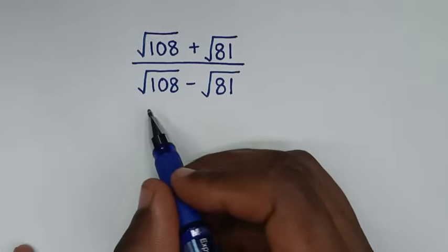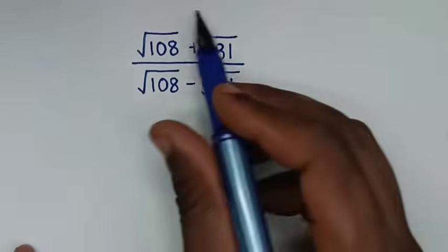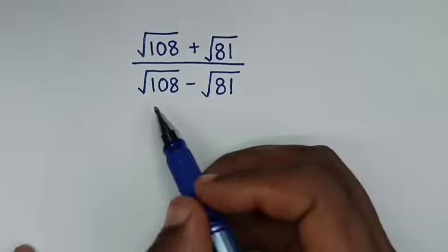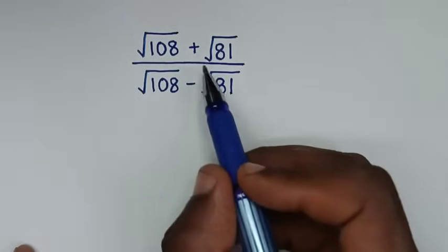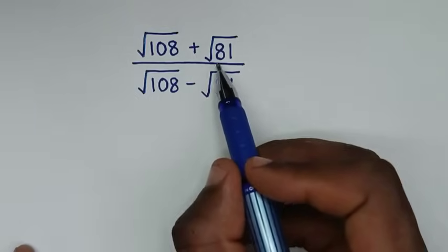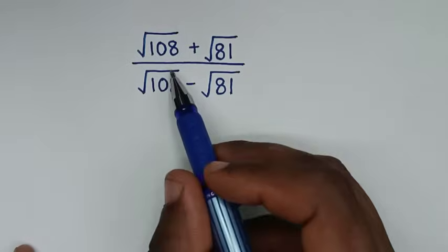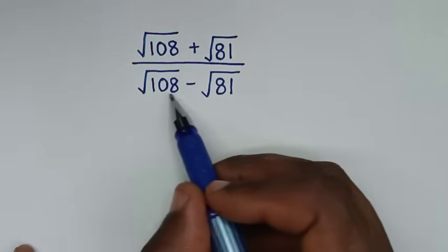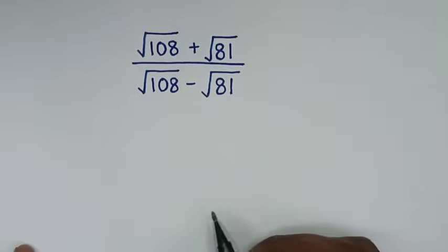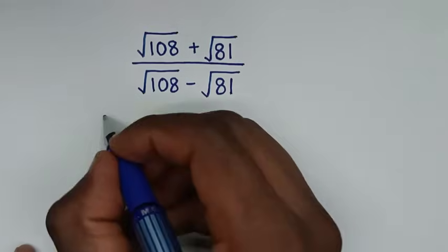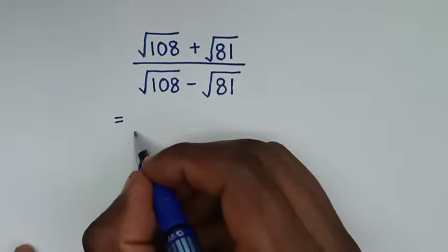Hello, you are welcome to solve this math problem, which is square root of 108 plus square root of 81 over square root of 108 minus square root of 81.